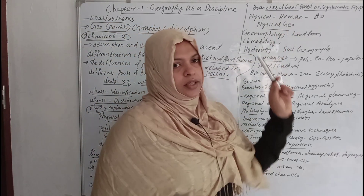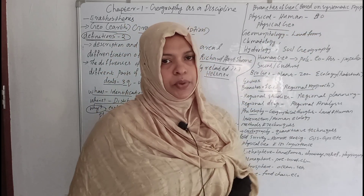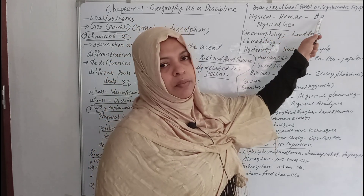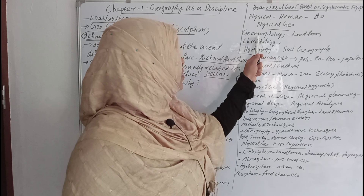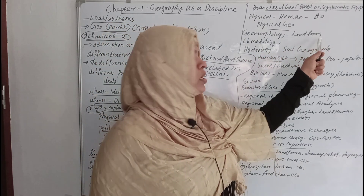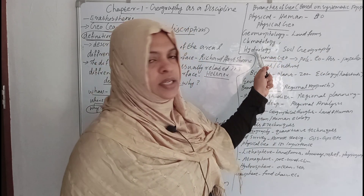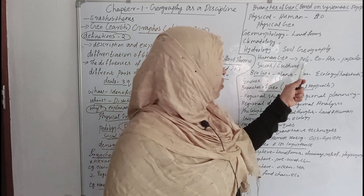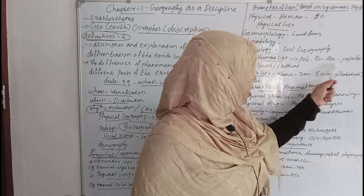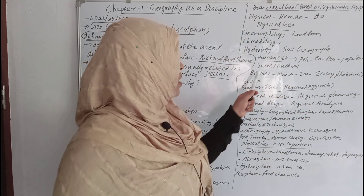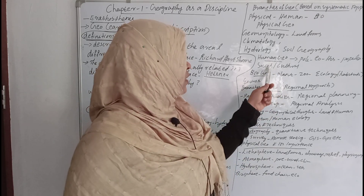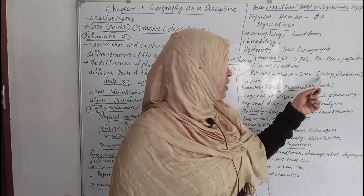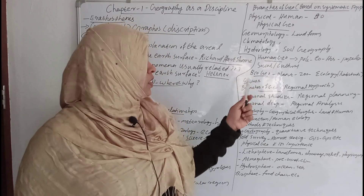Based on systematic approach, the branches of Geography are: Physical Geography, Human Geography, and Biogeography. Physical Geography includes Geomorphology, Climatology, Hydrology, Soil Geography, and Pedology. Human Geography includes Political Geography, Economic Geography, Historical Geography, Population or Demography, and Social and Cultural Geography. Biogeography includes Plant, Zoology, and Ecology.